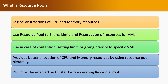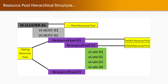Resource pool provides better allocation of CPU and memory resources by using a few parameters. Looking at the resource pool hierarchical structure in a virtual data center, we have a cluster, and that cluster is the root resource pool. If we create any resource pool inside that cluster, that will be a parent resource pool — in this case, resource pool 01 is the parent resource pool.